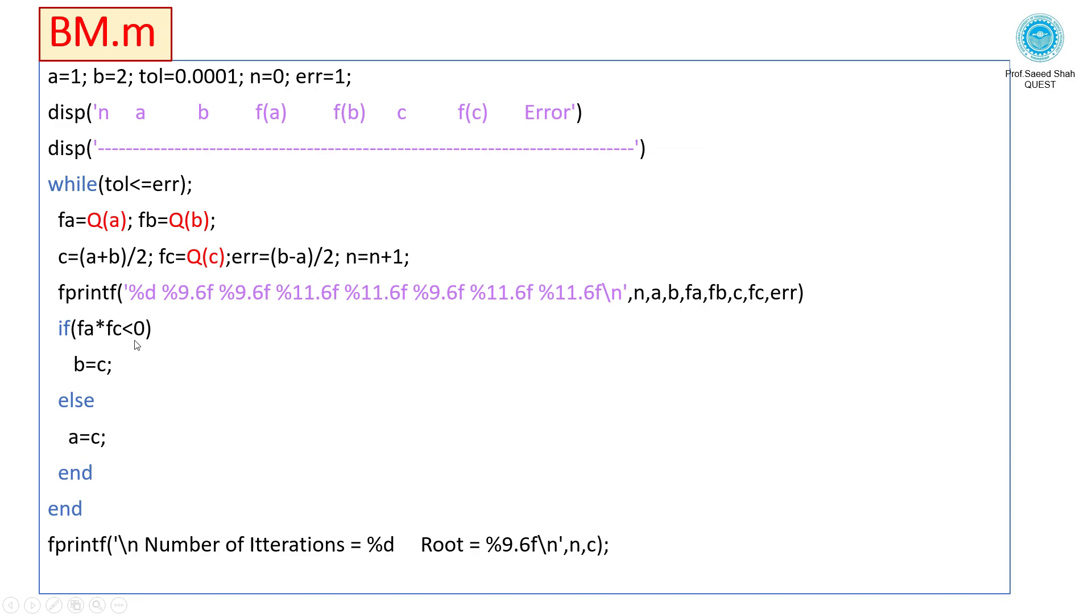If fa*fc < 0, then b=c, else a=c. End. fprintf number of iterations.